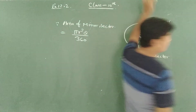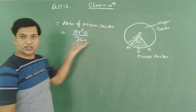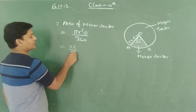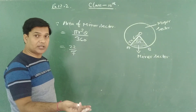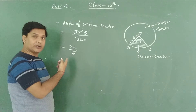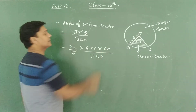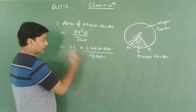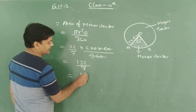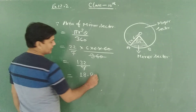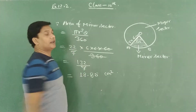Substituting the values: radius is 6 and angle θ is 60°. Pi is taken as 22/7. So area = (22/7) × 6 × 6 × 60/360. The 360 cancels with 60, leaving 132/7, which gives approximately 18.85 cm². This is the area of the minor sector.